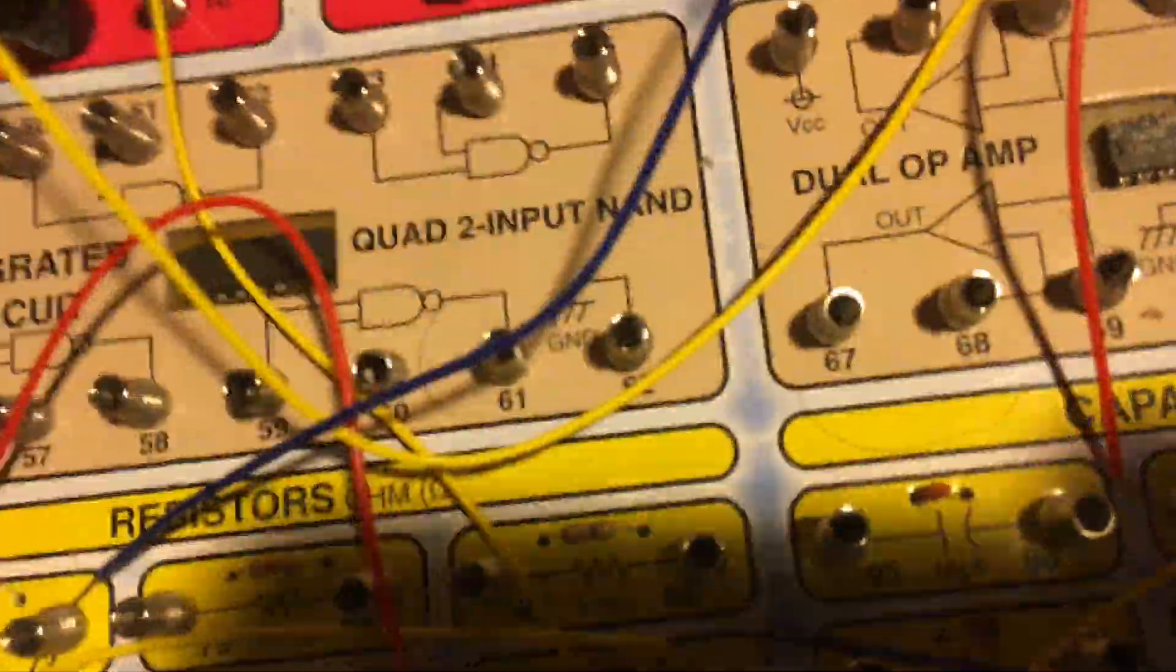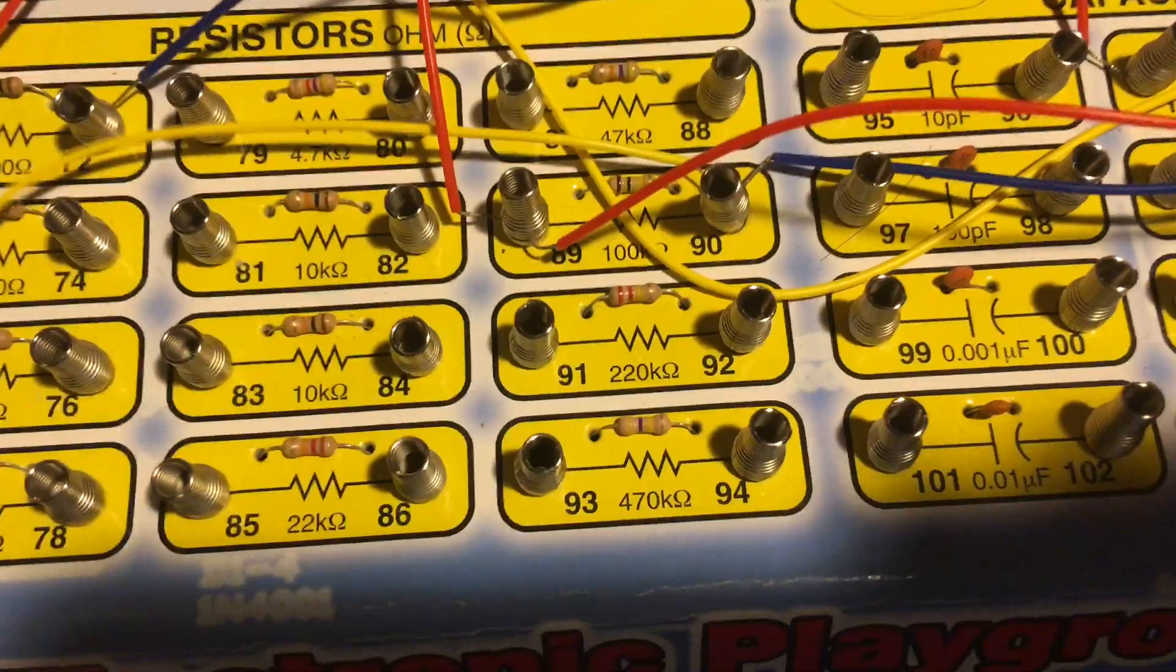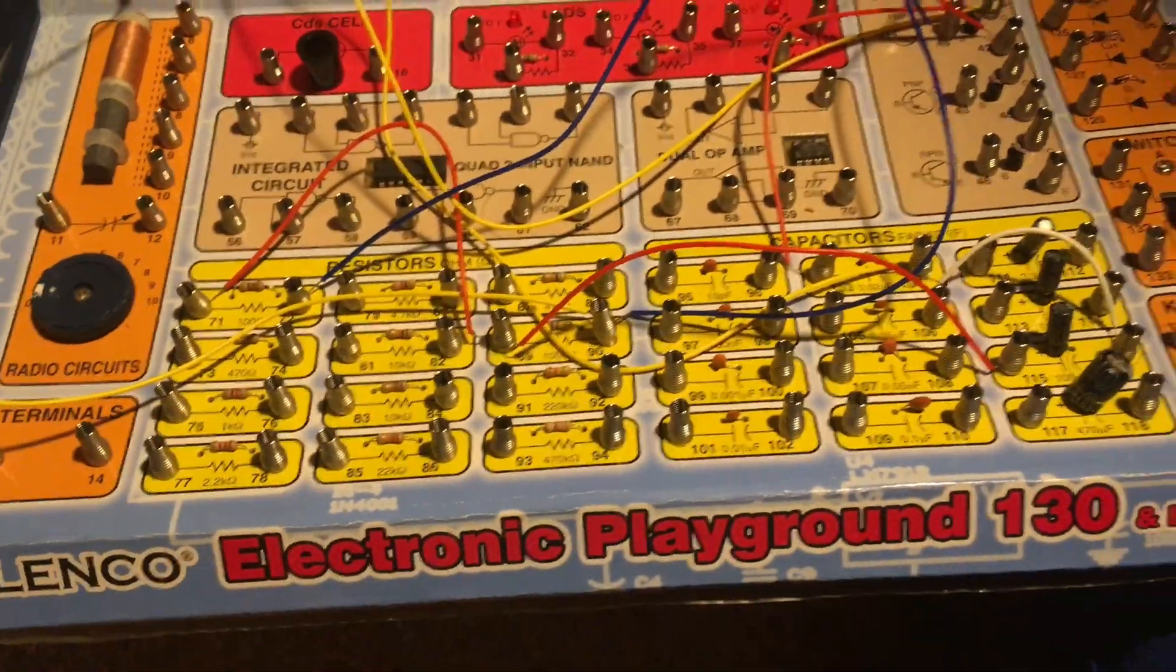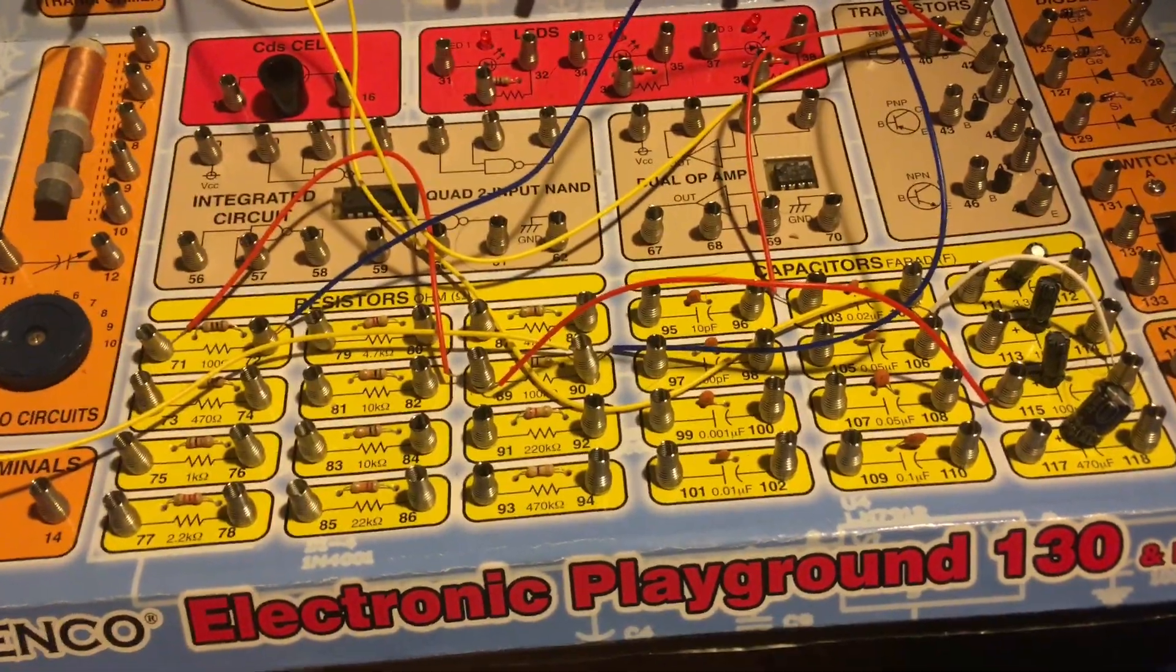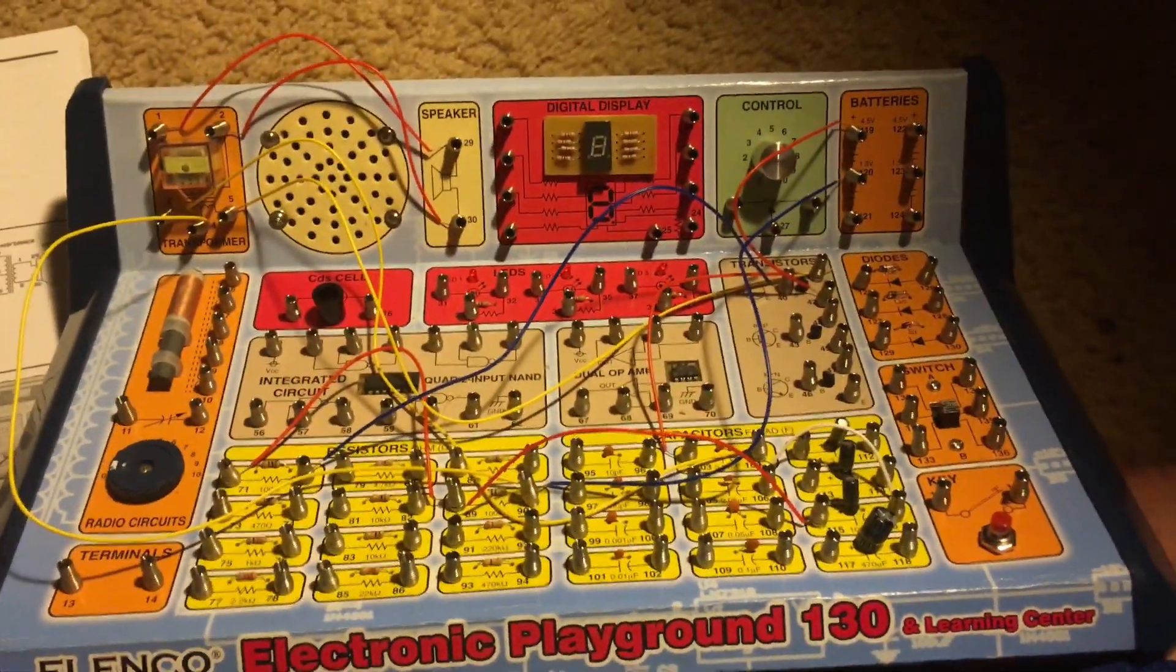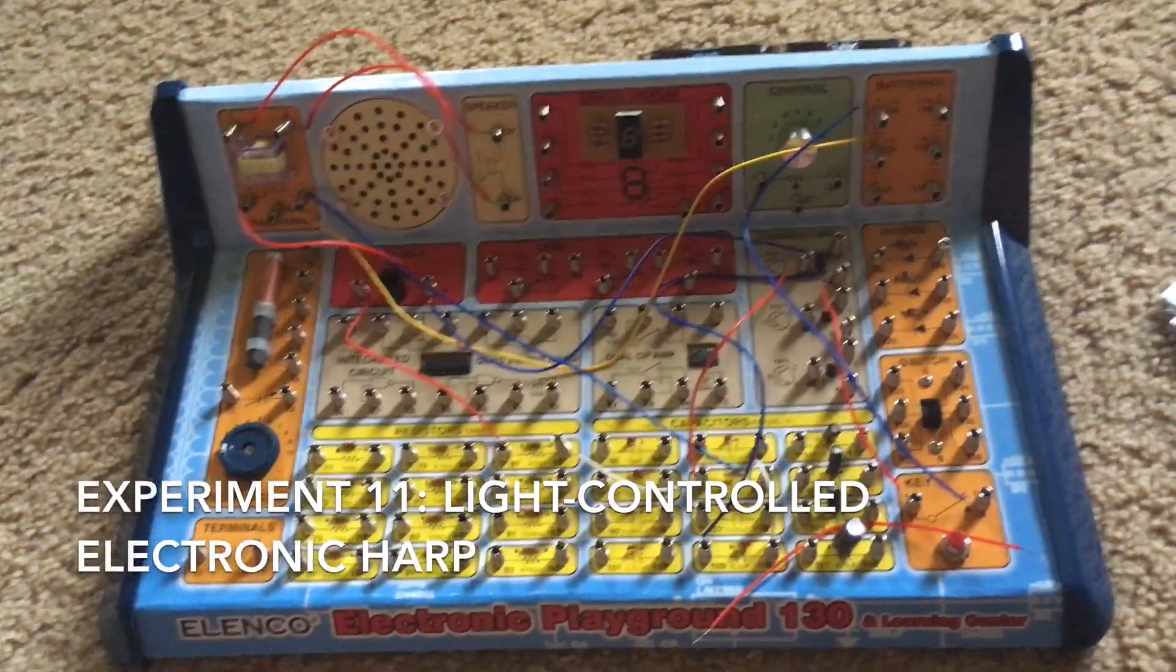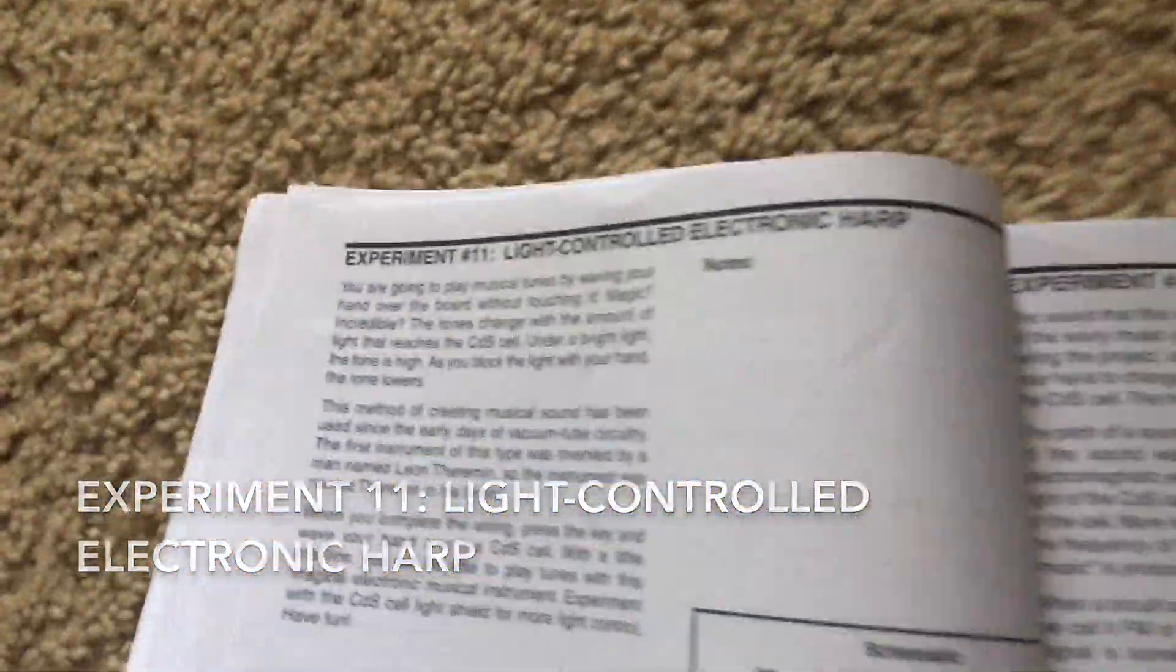You can change the 100k ohm resistor to speed up or slow down the pulse rate of the circuit. Experiment 11 is light controlled electronic harp.